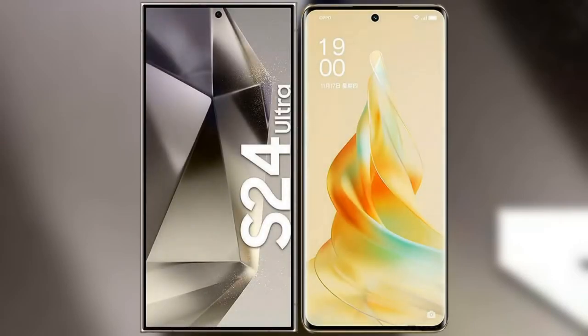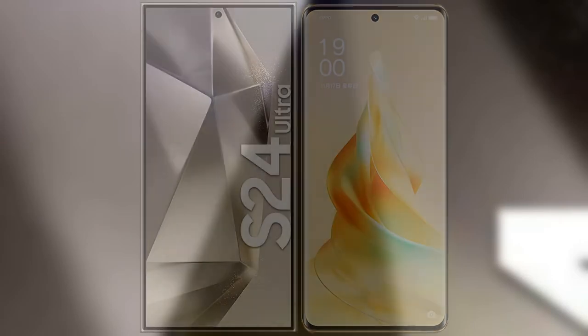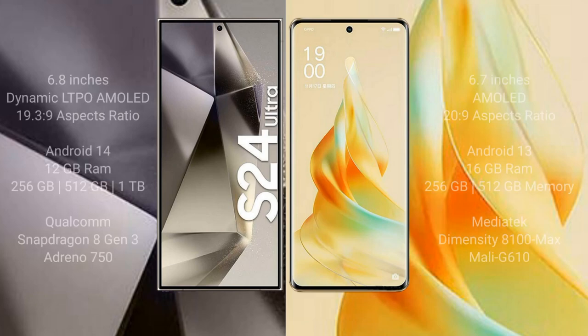I will compare the new Samsung Galaxy S24 Ultra with OPPO Reno 9 Pro. Samsung Galaxy S24 Ultra comes with a 6.8-inch Dynamic LTPO AMOLED display and Snapdragon 8 Gen 3 processor. OPPO Reno 9 Pro comes with a 6.7-inch AMOLED display and Snapdragon 8 Gen 2.